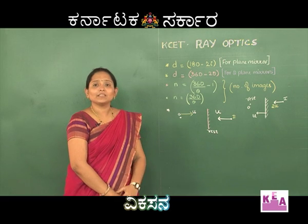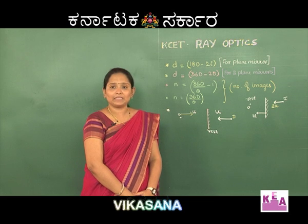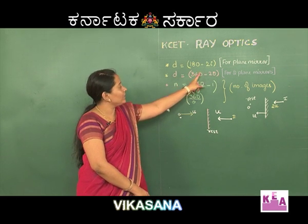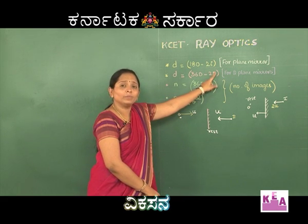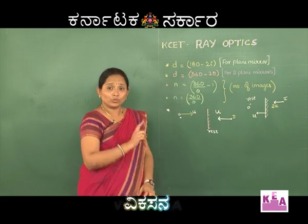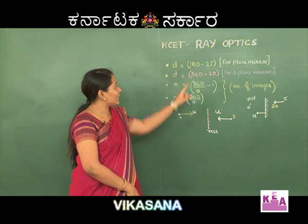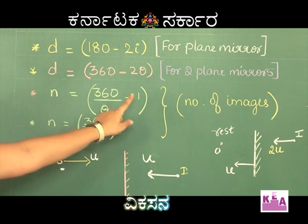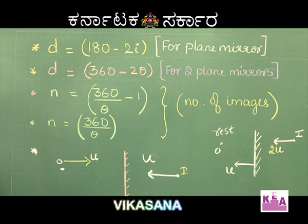In another case, when two plane mirrors are inclined by an angle theta, the deviation is given by d = 360 − 2θ, where theta is the angle between the two plane mirrors. Please make a note: in this case, the angle of deviation is independent of the angle of incidence — that is, irrespective of any angle of incidence, the deviation will remain the same.